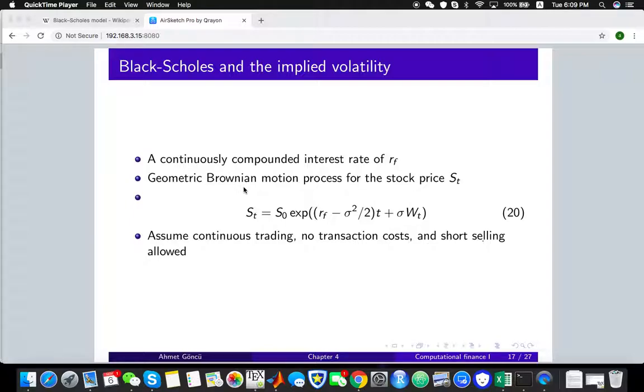First in the Black-Scholes model, we have the so-called Brownian motion process. This process, in this equation denoted by this W_t, is from time zero all the way to infinity. So this is our Brownian motion process.